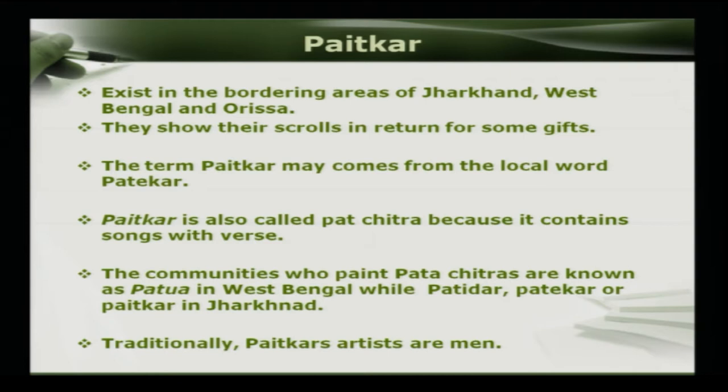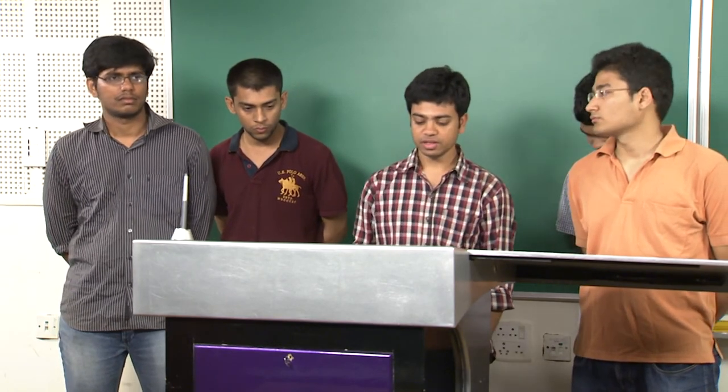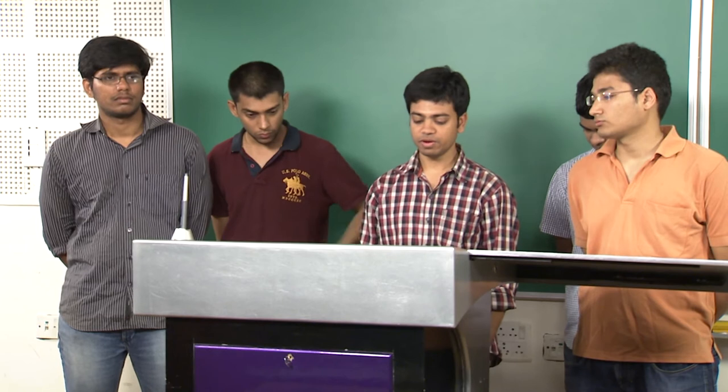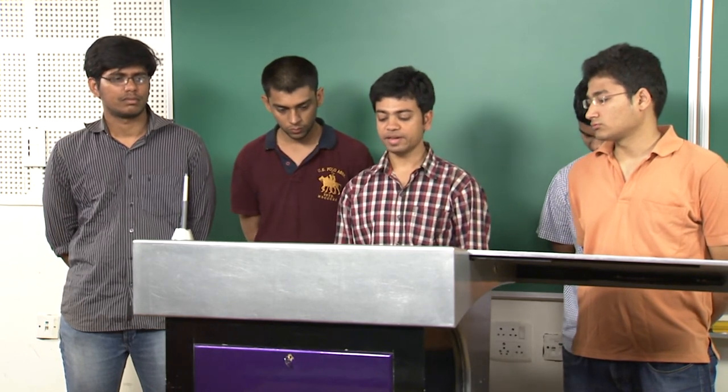The next form of art is Patkar. It exists in the bordering areas of Jharkhand, West Bengal, and Odisha. The term Patkar may come from the local word Patkar. It is also known as Pat Chitra because it contains songs and words. The communities who paint Patkar are known as Patwa in West Bengal, while they are called Patkar in Jharkhand.